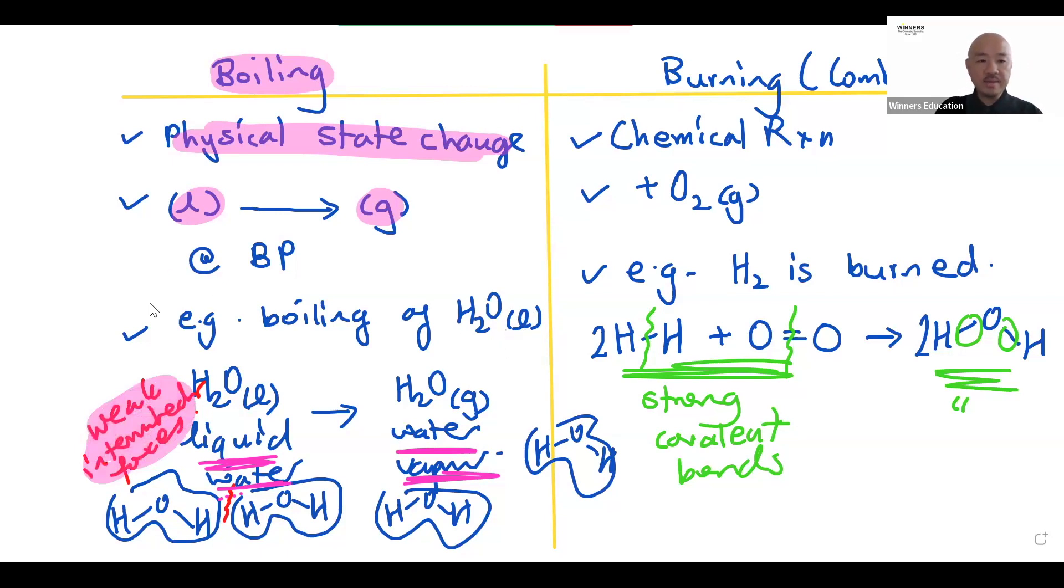Whereas burning is different. Burning, known as combustion, is a chemical reaction. Oxygen is involved and you're going to get new products by the breaking of the strong covalent bonds. I hope this is clear and make sure that we bring this to other topics of chemistry. I hope you enjoyed the video. Thank you.